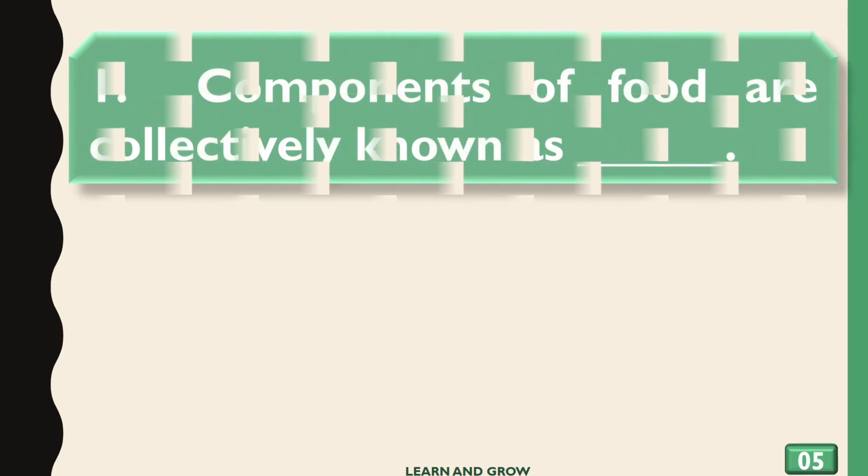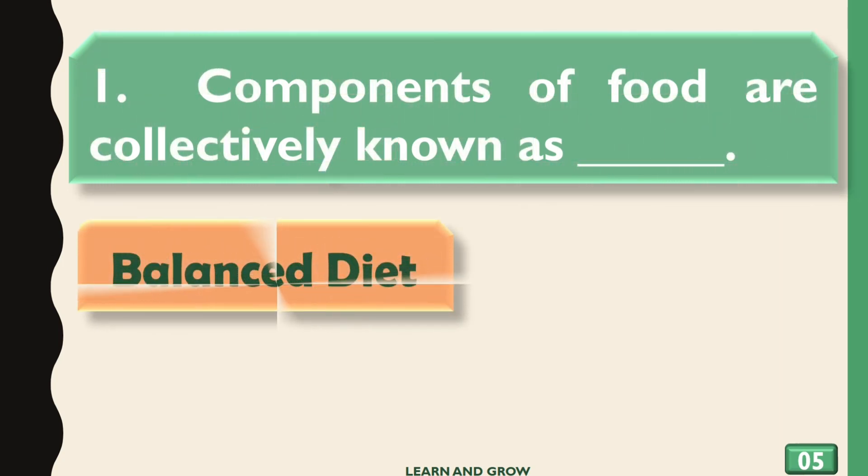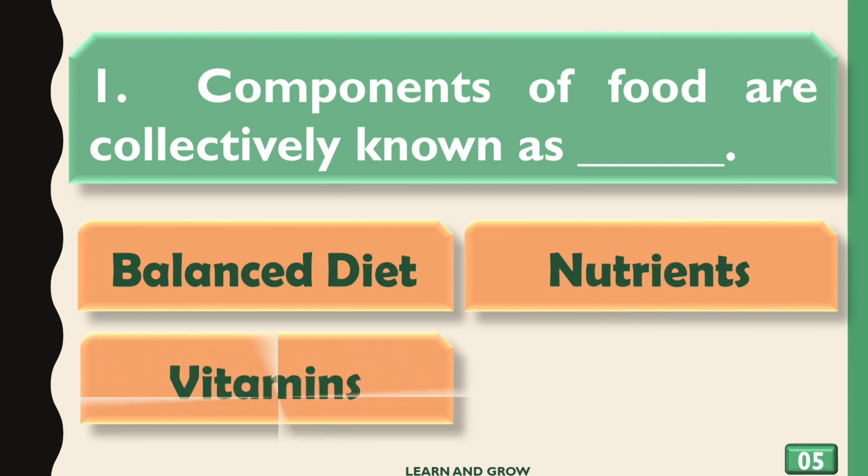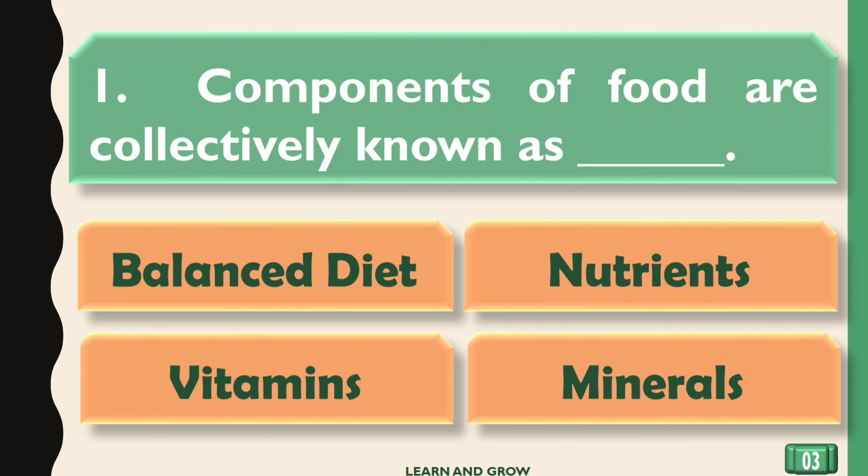Components of food are collectively known as: options are Balanced Diet, Nutrients, Vitamins, or Minerals. The right answer is Nutrients.